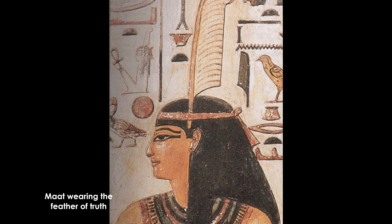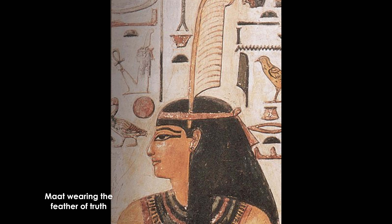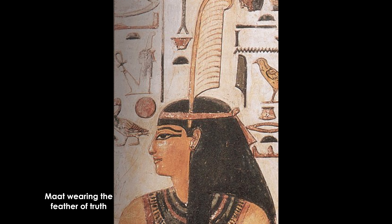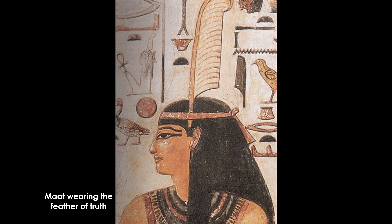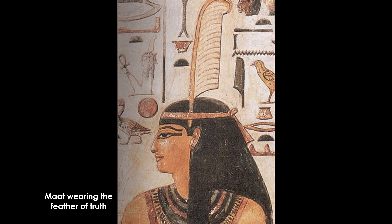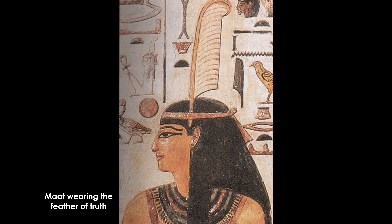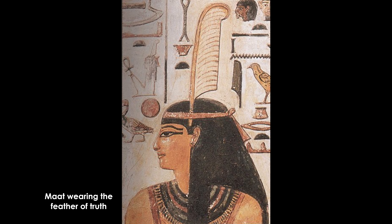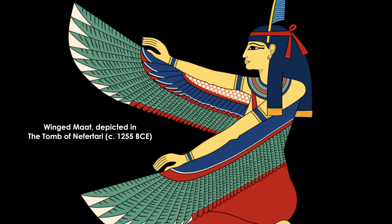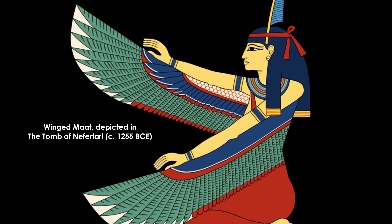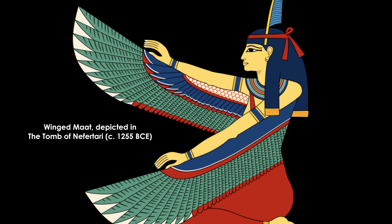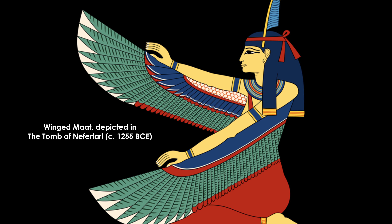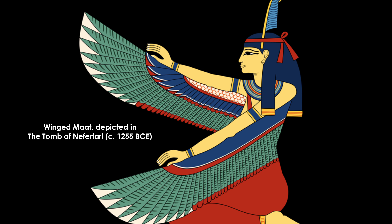A good example of this is Ma'at, a fundamental concept and symbol in ancient Egyptian thought — though some falsely consider her a goddess. Ma'at represented the fundamental order, balance, harmony, and truth in the universe. She was often depicted with an ostrich feather on her head, symbolizing truth and justice. The ancient Egyptians believed Ma'at was the foundation upon which their society, government, and even the entire cosmos were built.